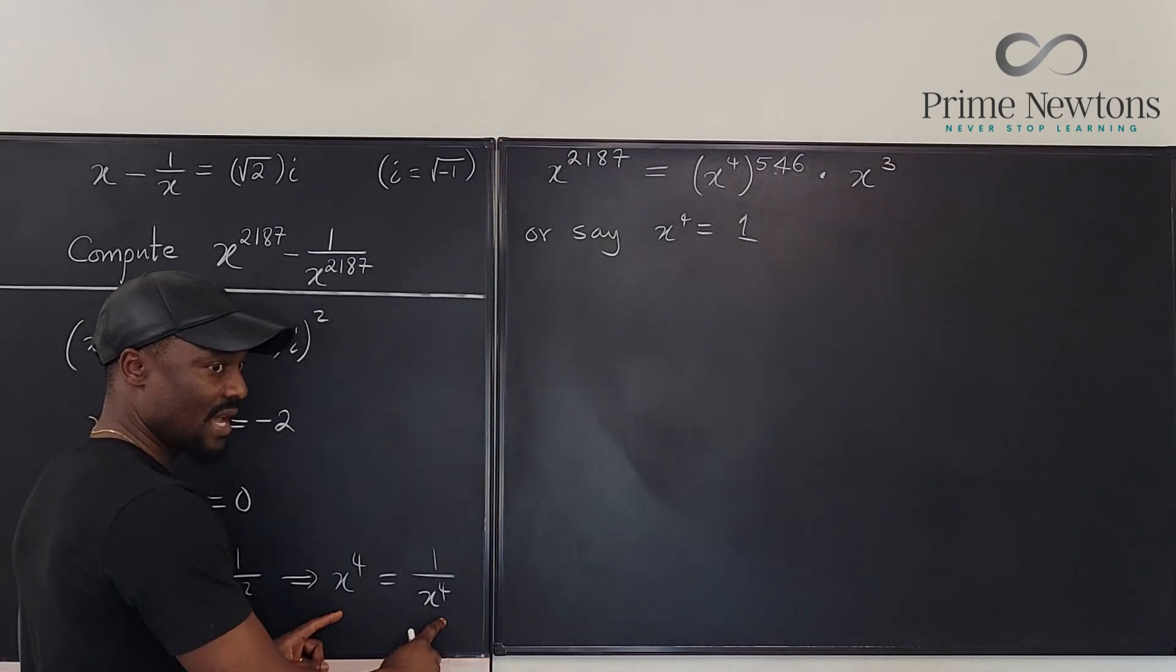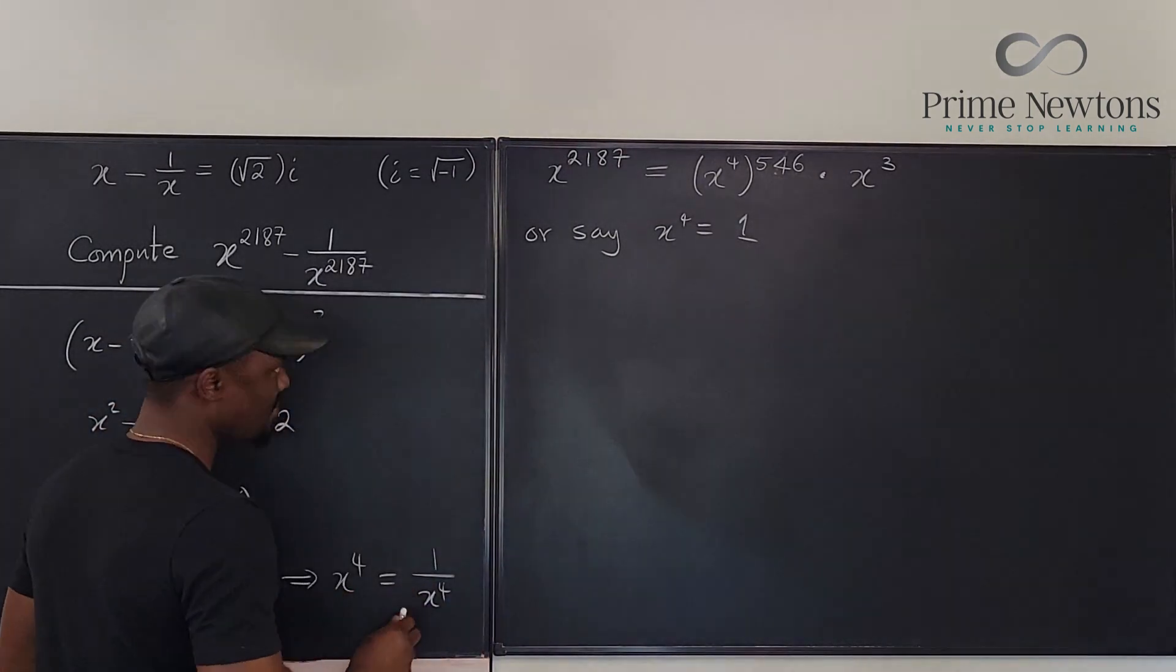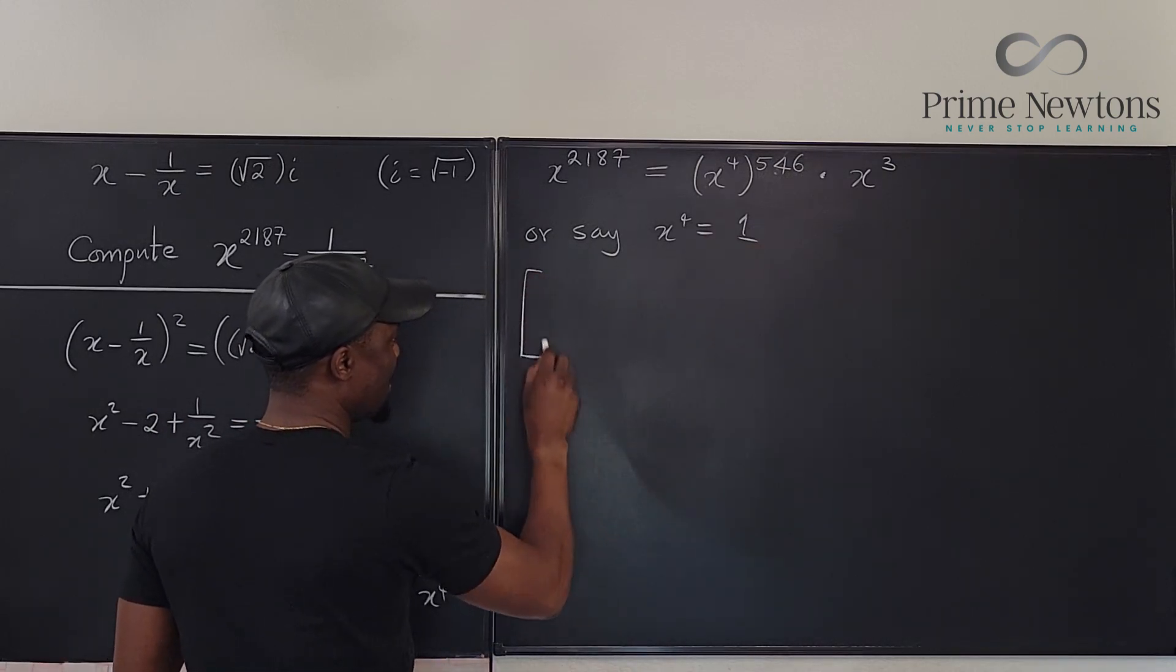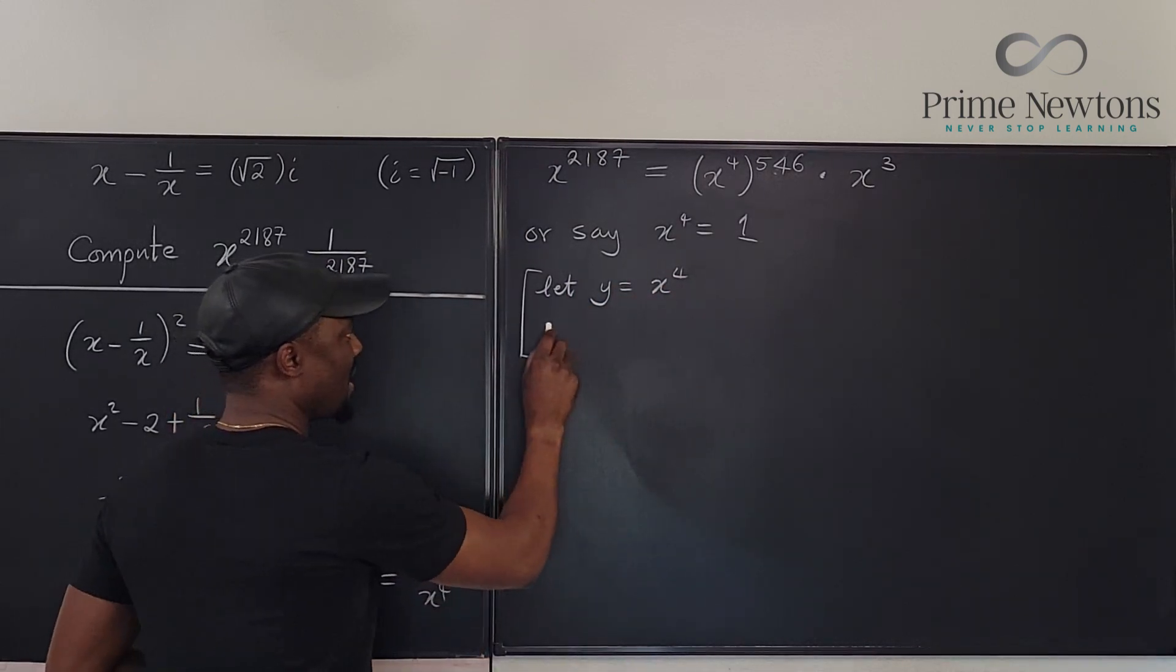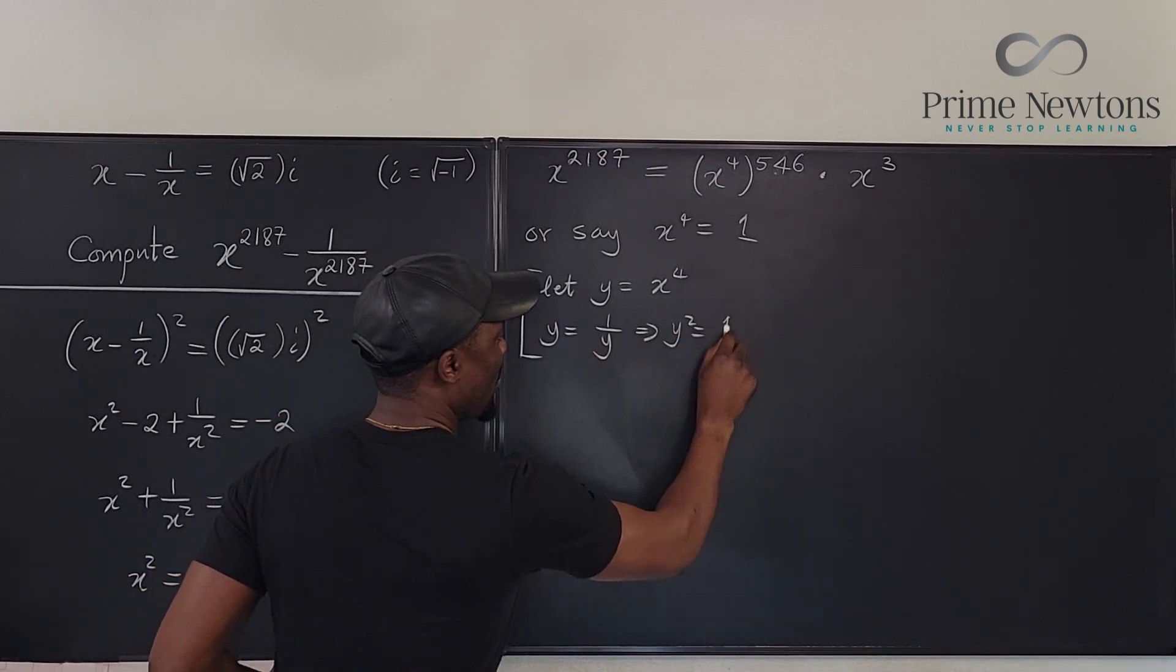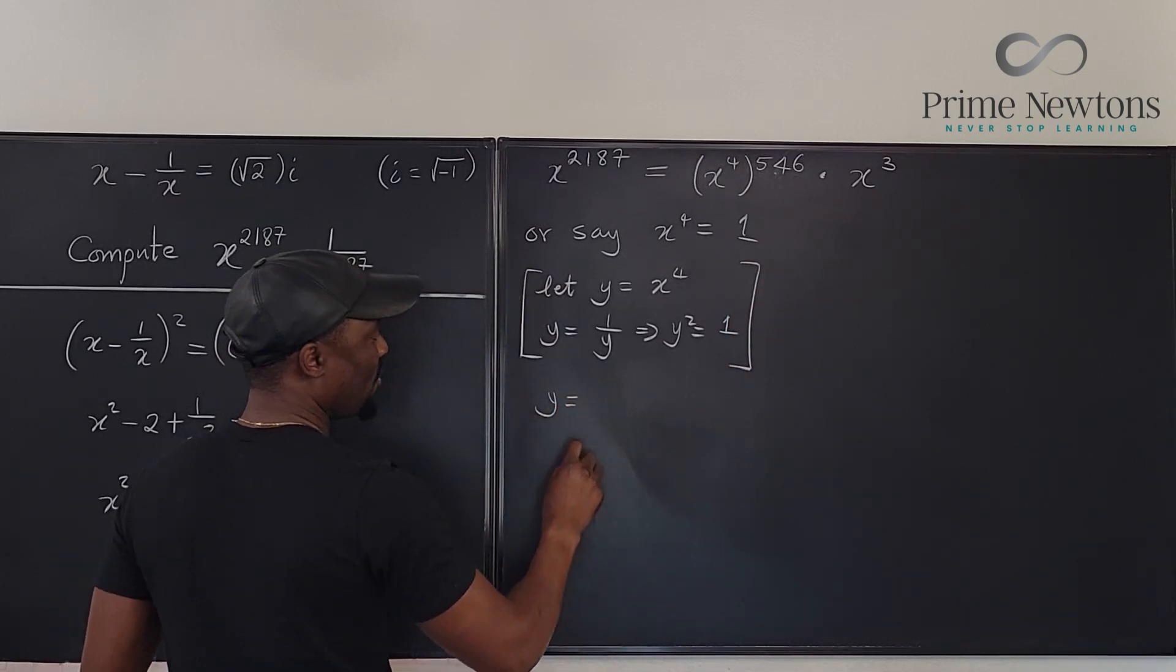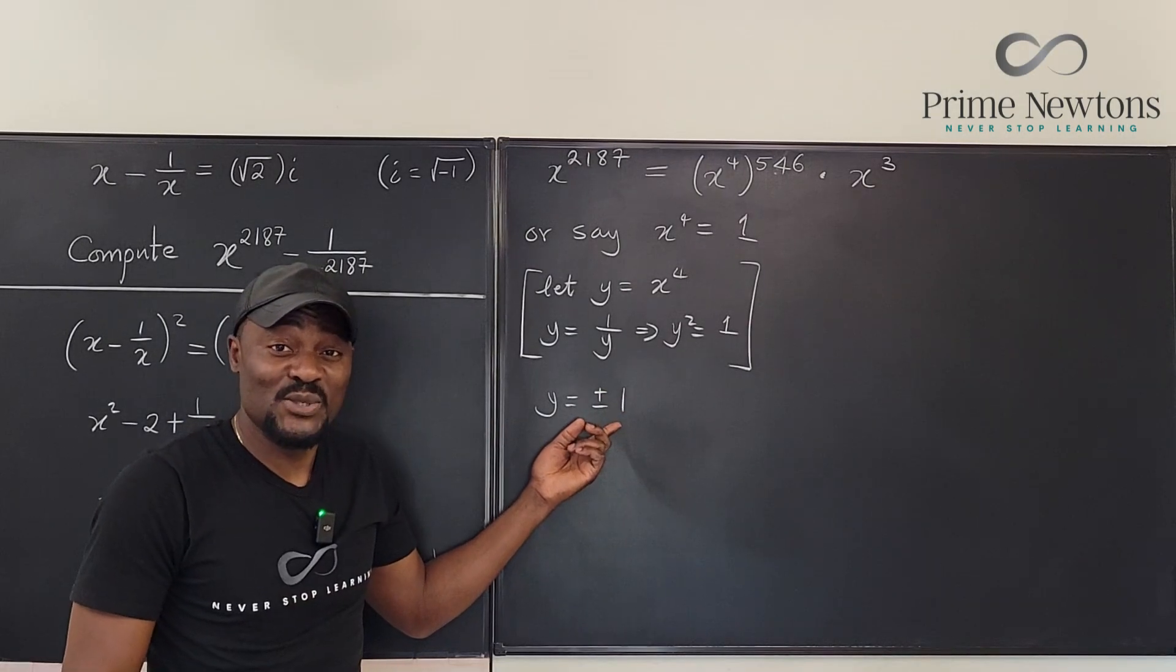Okay, I can say, or say, x to the fourth is equal to 1 based on this. Remember, if you try to solve this, you're going to have—let's say, or say, x to the fourth equals 1. Let me show you what I mean here. Let y be equal to x to the fourth, so that means that y equals 1 over y, which implies y squared is equal to 1.